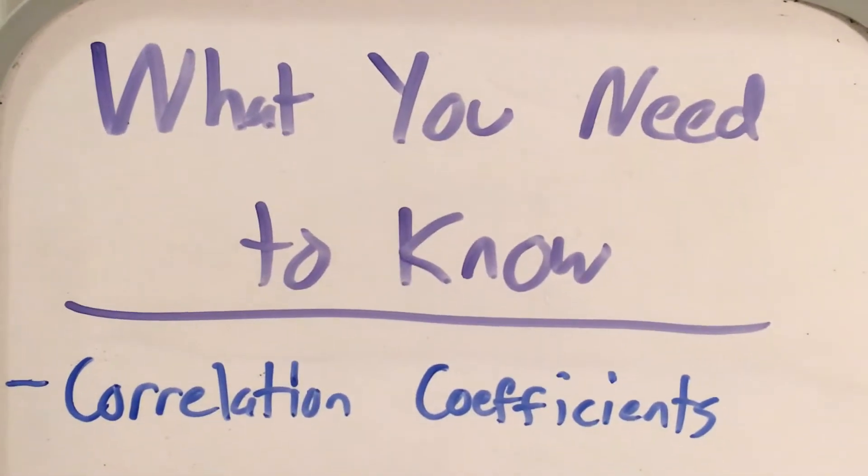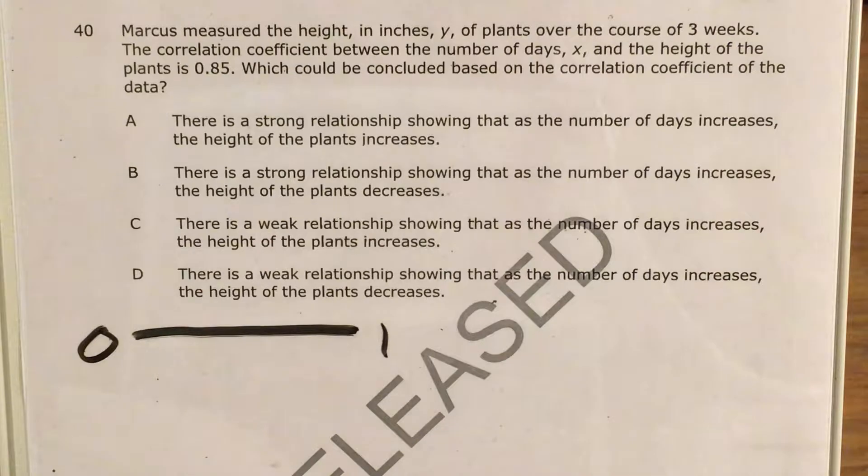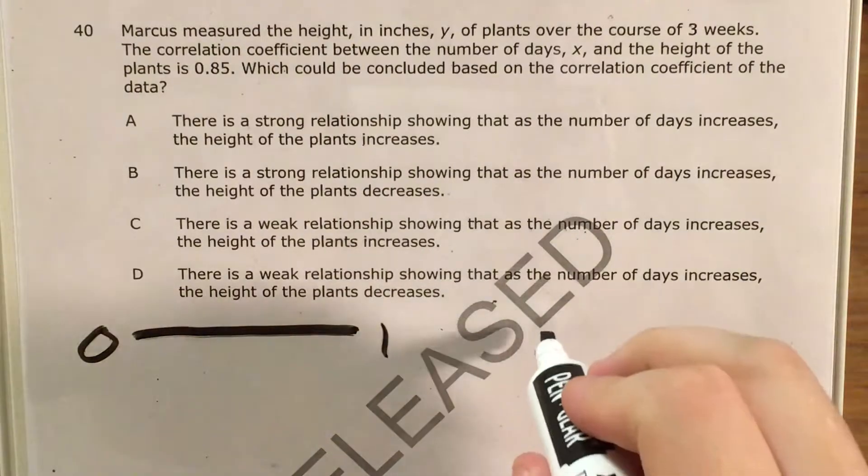As you might have guessed, the big skill that this question tests is your knowledge of correlation coefficients. So we're going to go ahead and go over that. There's two parts to every correlation coefficient: there's the number and there's the sign.